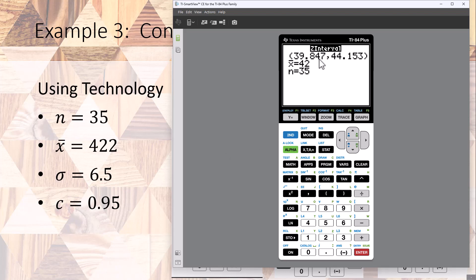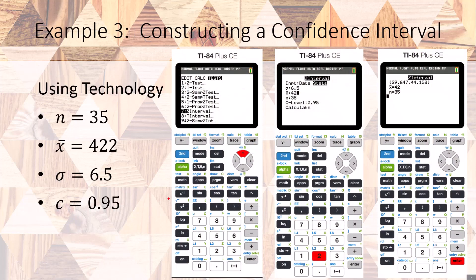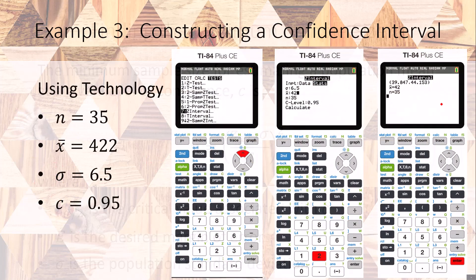Go over, hit calculate, and there is your answer. Notice here we have 39.847 that will round to 39.8, and here we have 44.15 that will round to 44.2, which is exactly what we got before.